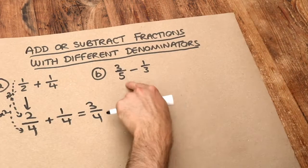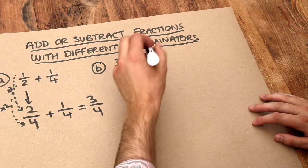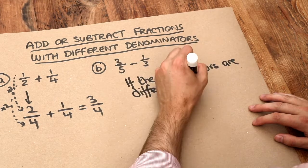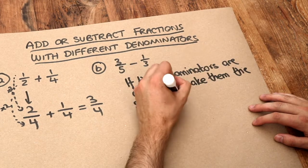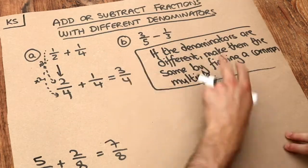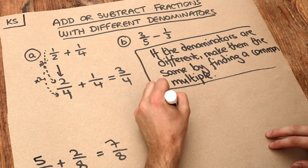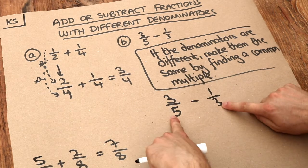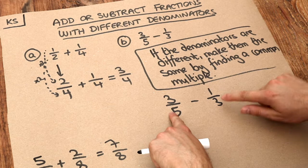Let's do that with this second one. Now if you want to write something for your notes write this. If the denominators are different, make them the same by finding a common multiple. So we've got 3/5 minus 1/3. Let's look at these denominators. Can you find a common multiple of 5 and 3?